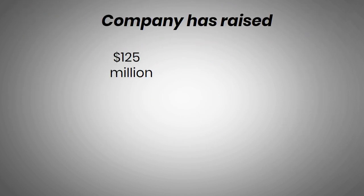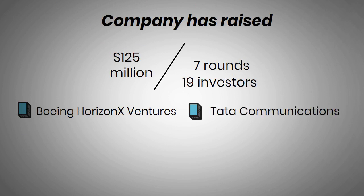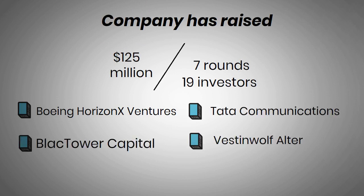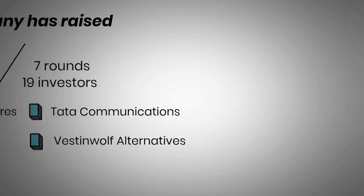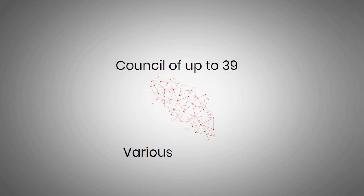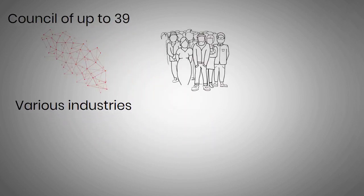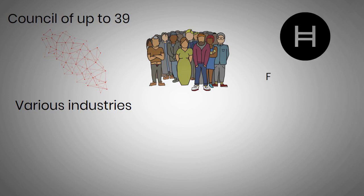The company has raised a total of $125 million in funding from seven rounds and was funded by 19 investors, including Boeing Horizon X Ventures, Tata Communications, Black Tower Capital, Vest and Wolf Alternatives, among others. The council of up to 39 prominent worldwide corporations governs their network, representing various industries with several well-known companies. With such a wide group of industry participants, Hedera Hashgraph can gain fresh viewpoints on industry difficulties.